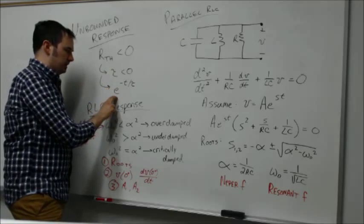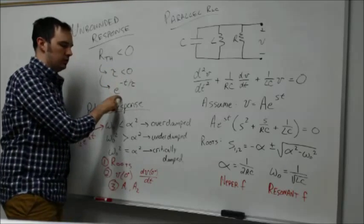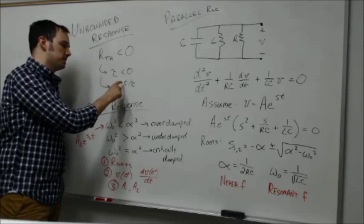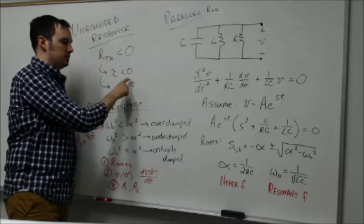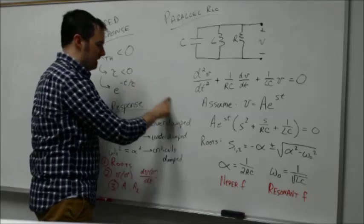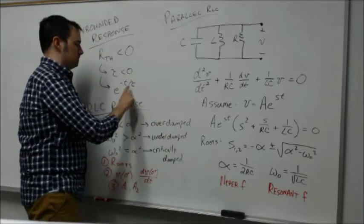If I plug that into this decay term that we saw in each of the given responses with the RL and RC circuit, this minus T over tau term is obviously going to now be a positive quantity, which means now instead of having an exponential decay going down, I have an exponential rise.